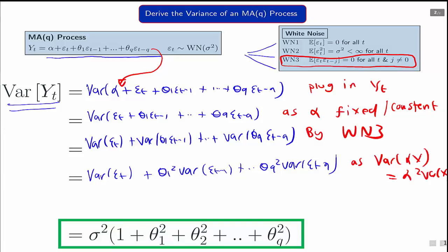Finally, we can use the white noise assumption 2, that all the variances are equal in different time periods. So all these variances, epsilon T, T minus 1, T minus Q, all equal sigma squared.